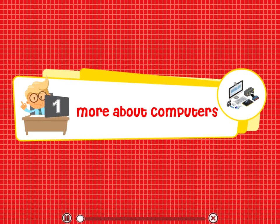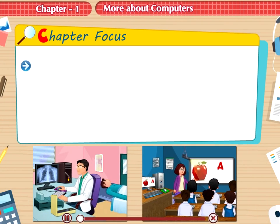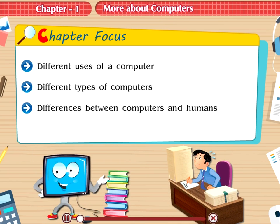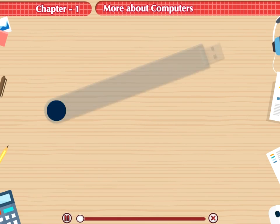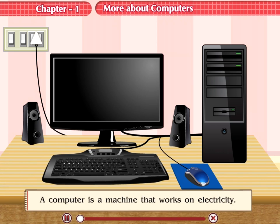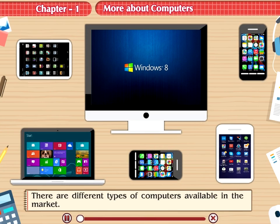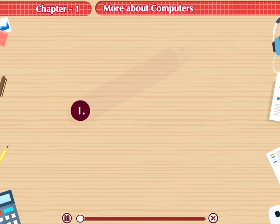More about computers. Chapter Focus: Different uses of a computer, different types of computers, and differences between computers and humans. Let us learn more about computers. A computer is a machine that works on electricity. There are different types of computers available in the market. Let us know about some of them.